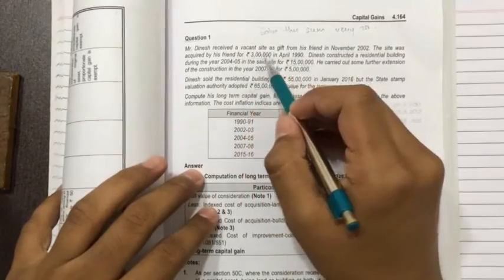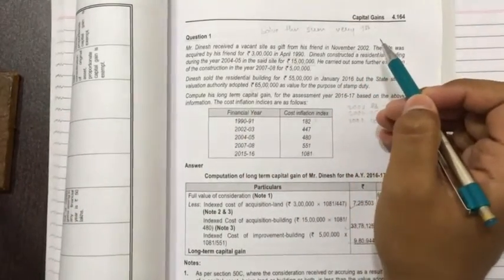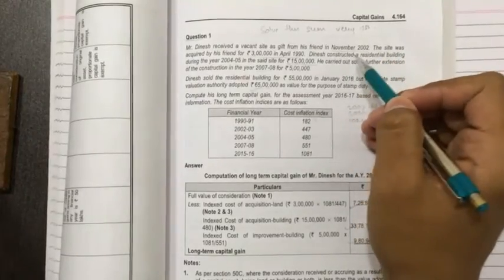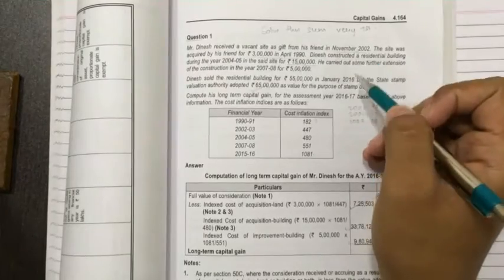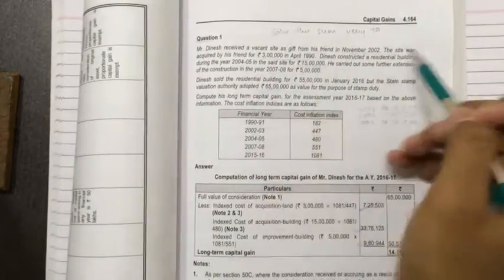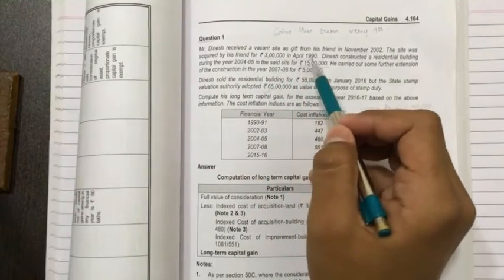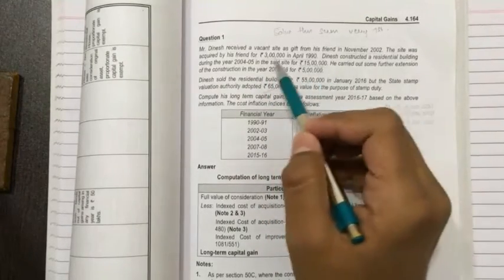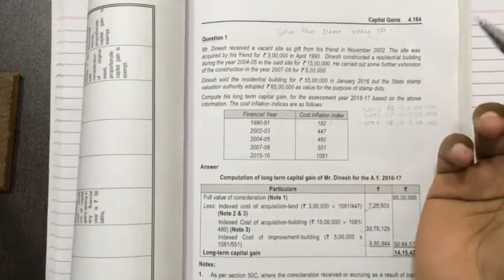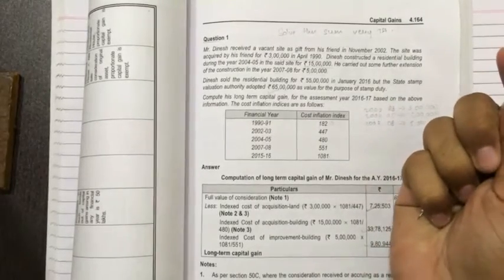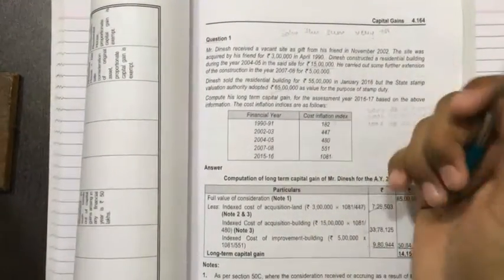Mr. Dinesh received a vacant site as a gift from his friend in November 2002. He has received a gift of what? Vacant site. Vacant site means immovable property. The site was acquired by his friend for rupees 3 lakh in April 1990. So it is immovable asset which is more than aggregate of 50,000 that I have taught you in the income from other sources, so it is not exempt. So let's move on.